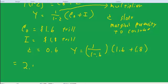And that will equal, the multiplier will now be 1 over 0.4, which is 2.5. So the multiplier is 2.5 times 1.6 plus 1.8. And that will give us 8.5. So that's our 8.5 trillion.